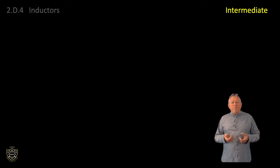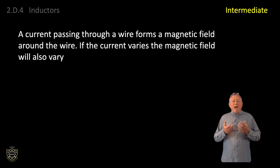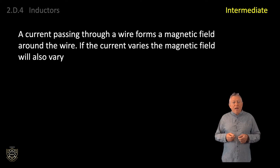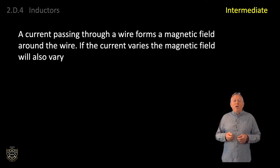So a current passing through a wire forms a magnetic field around the wire. If the current varies, the magnetic field will also vary.